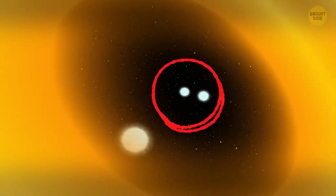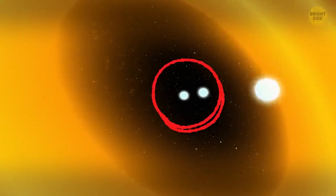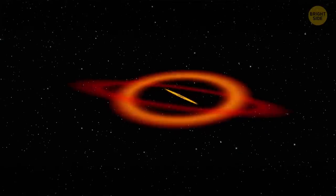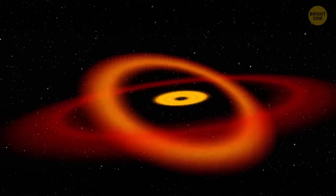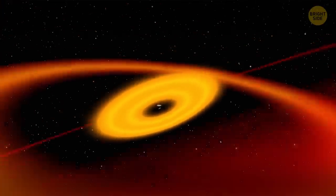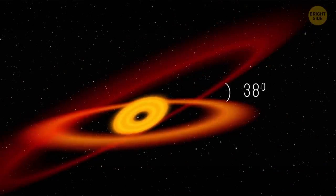Two of these stars are binary. It means they orbit each other. The third star revolves around them. Scientists have found out that the three rings are misaligned. The innermost ring swings widely in its orbit. And the outermost ring has a tilt of 38 degrees.